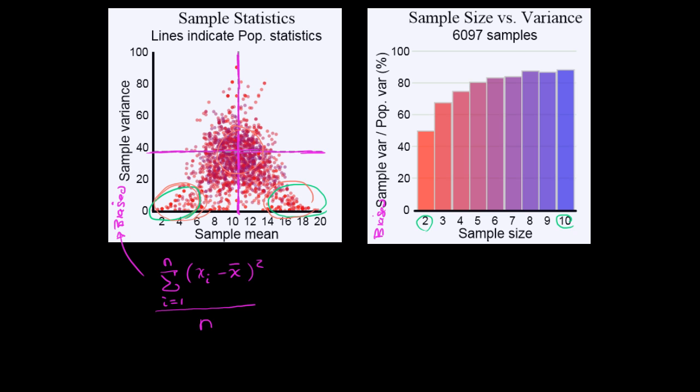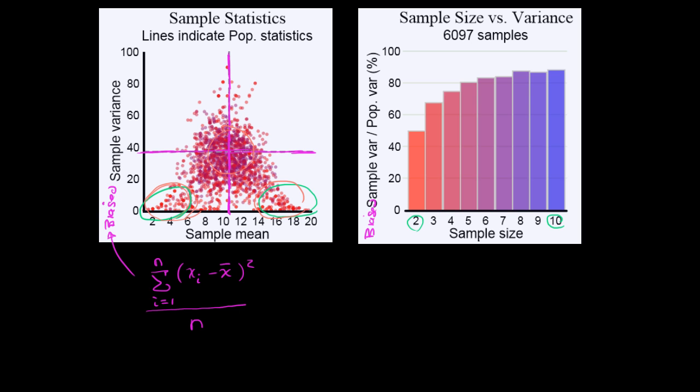Now, this next chart really gets to the meat of the issue. Because what it's telling us is that for each of these sample sizes, so this right over here, for sample size two, if we keep taking sample size two, and we keep calculating the biased sample variances, and dividing that by the population variance,